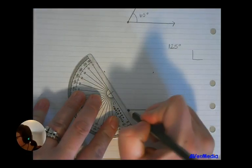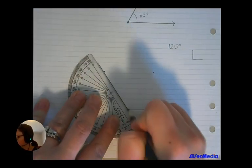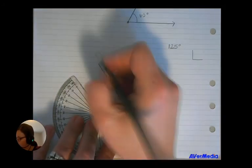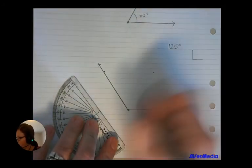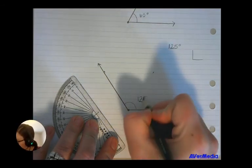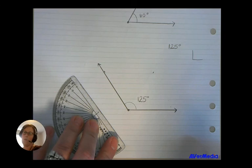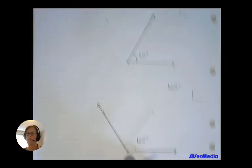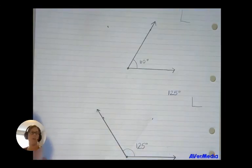So we're going to connect our lines here. To make another ray, put our arrow at the end, and do that little partial circle and label that as 125 degrees. And there you go. How to draw an acute and an obtuse angle with your protractor. Thank you so much for joining us.